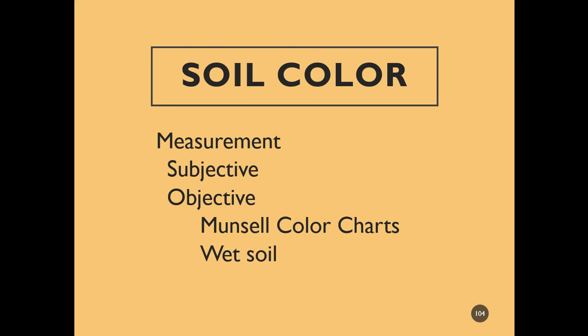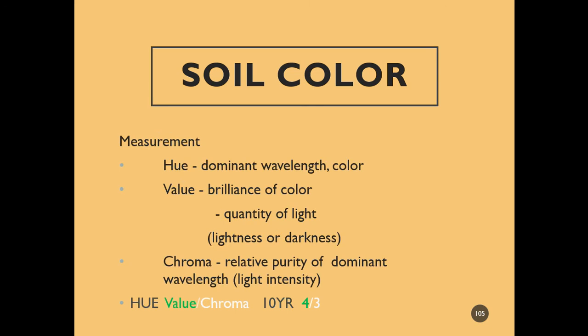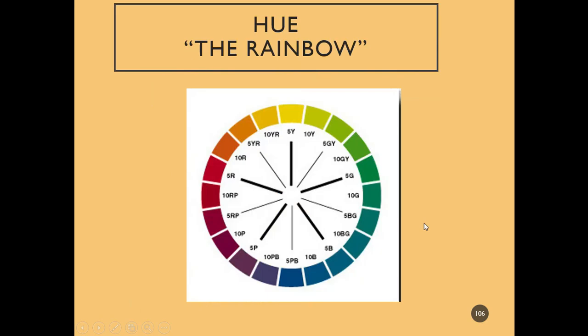So, soil color measurement — it's both subjective and objective. We measure it using Munsell color charts on a wet soil. Munsell color charts measure the hue, value, and chroma of the soil. A soil color on the Munsell color chart would be noted like 10YR 4/3 — so 10YR is our hue, 4 is our value, and 3 is our chroma. Hue is the dominant wavelength, or the color. Value is the brilliance of the color — so the lightness or darkness. And then chroma is the purity.